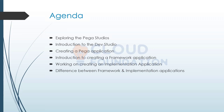When it comes to Pega studios, earlier when Pega was in version 7.4 we did not have these studios — we just had App Express and Designer Studio. But now we have four different studios, each specifically designed for different sets of people, each for a specific purpose. Those studios are App Studio, Dev Studio, Admin Studio, and Prediction Studio.